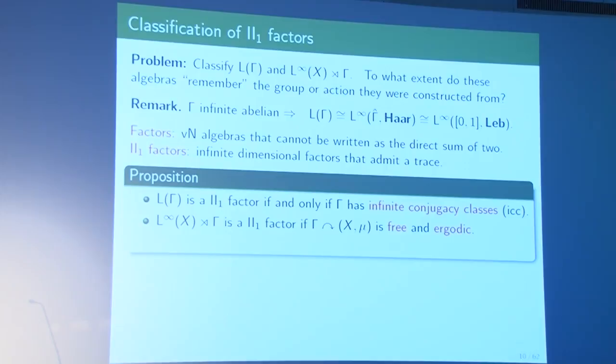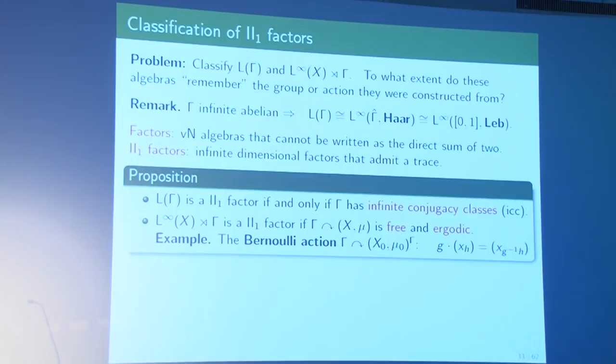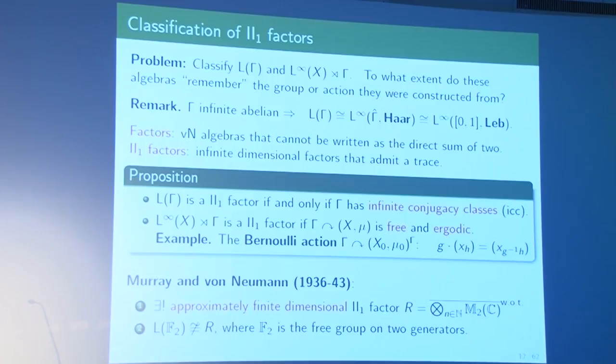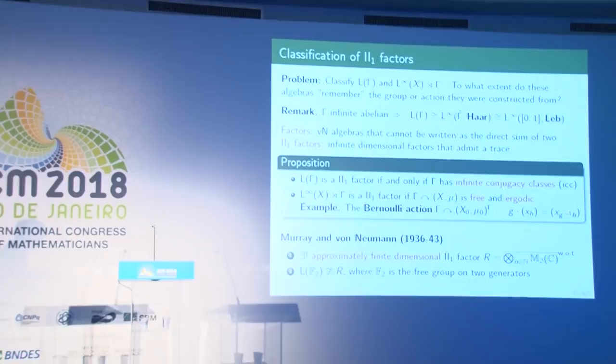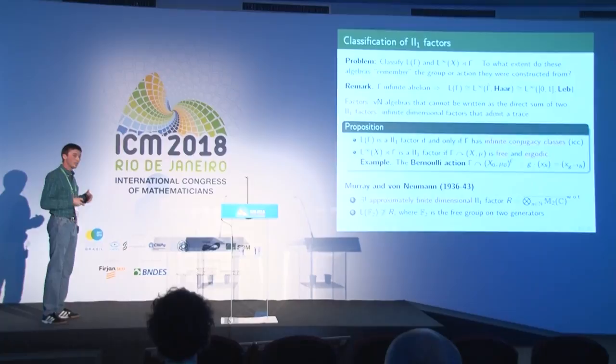Basic examples of free ergodic actions are Bernoulli actions: for any countable group Γ, the Bernoulli action is on a space of the form X₀^Γ using the left multiplication action of Γ on itself. Murray and von Neumann proved two important early facts: there exists a unique II₁ factor R which is approximately finite dimensional, constructed as the closure of the infinite tensor product of 2×2 matrices; and there are II₁ factors not approximately finite dimensional — for instance, the von Neumann algebra of the free group on two generators.